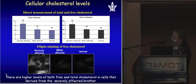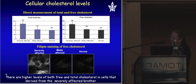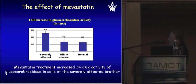Can we change the severity of disease? For us, in terms of cells, severity means enzymatic activity. Can we change enzymatic activity by lowering cholesterol level? We can lower cholesterol by inhibiting its synthesis using an inhibitor of the key enzyme in cholesterol synthesis — HMG-CoA reductase — so we used the statin mevastatin. We could show that free and total cholesterol levels in the cell decreased dramatically to almost normal levels.